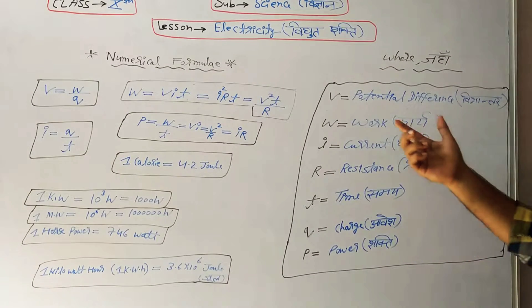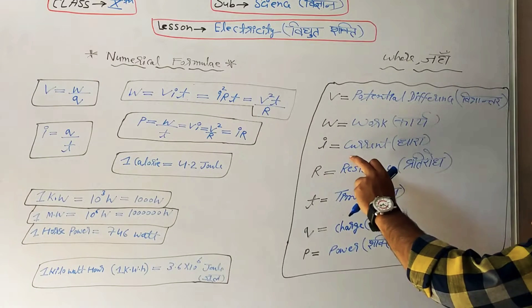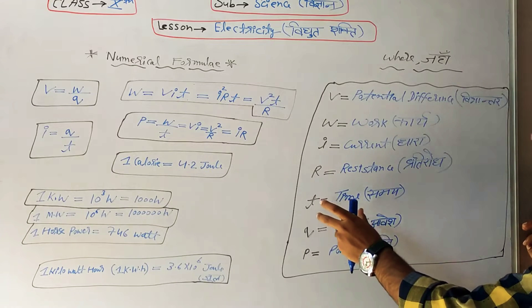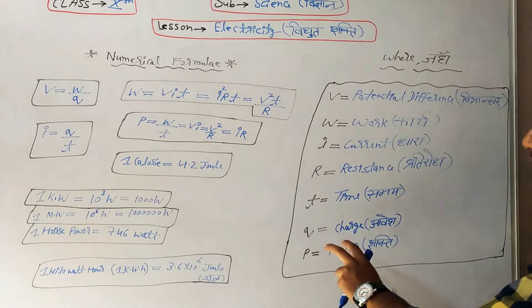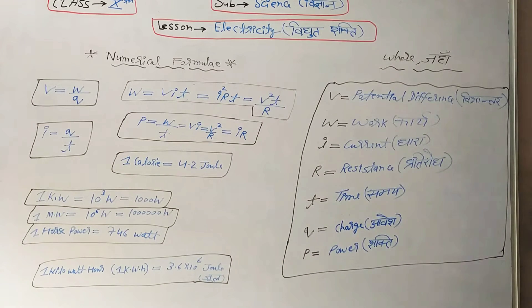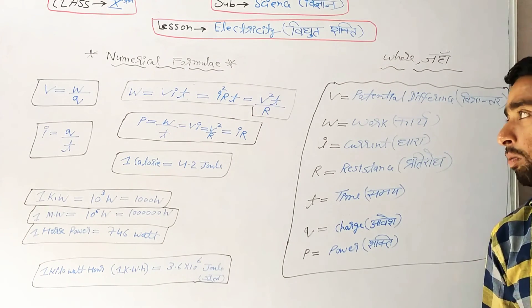Now let's understand the meanings. V is potential difference. W is work. I is current. R is resistance. T is time. Q is charge. P is power. This is the numerical formula set. These are strong formulas.